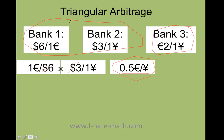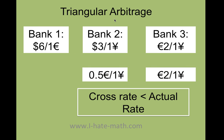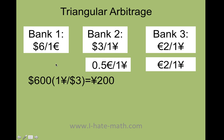Remember we have $600. Where should I start — bank one or bank two? One yen gives me half a euro at the cross rate, but here one yen gives me two euros. So that tells me that the yen is actually very strong. I'm going to start with bank two. I grab my $600 and go to bank two and switch it for yen: 600 times one divided by three eliminates the dollars and I get 200 yen.